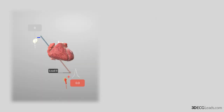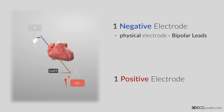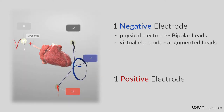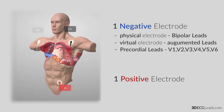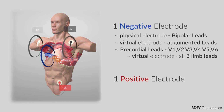It is important to remember that every tracing lead has a negative electrode and a positive electrode. The negative electrode can be a physical electrode as in the bipolar leads, or a virtual electrode as in the augmented leads. In the case of V1 through V6, the virtual electrode is generated by all three limb electrode leads — the right arm, left arm, and left foot — and it is named Wilson's central terminal.